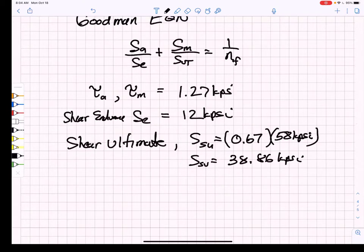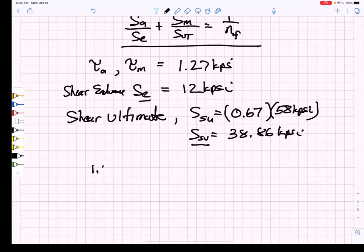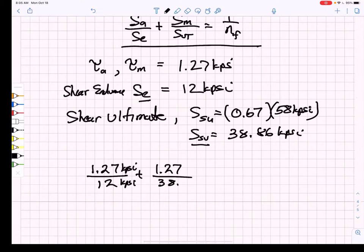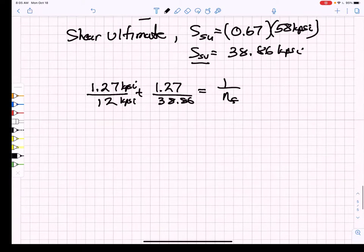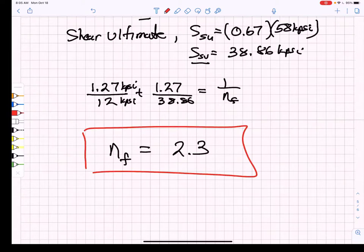Now I have everything I need. I'm going to put my shear stresses into the Goodman equation. I'm going to use my shear stress ultimate and my corrected endurance strength. So I get 1.27, that is my shear stress amplitude, divided by 12, plus my mean stress, 1.27 kpsi, divided by my shear ultimate, 38.86. That's going to be equal to 1 over my fatigue factor of safety. I solve for that, and I get a fatigue factor of safety of 2.3. This is the approach you would take to work out weld fatigue.